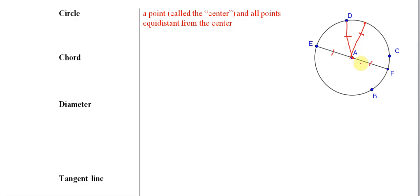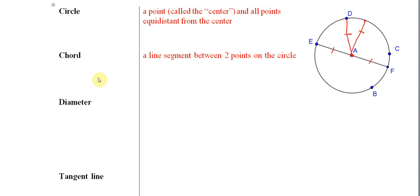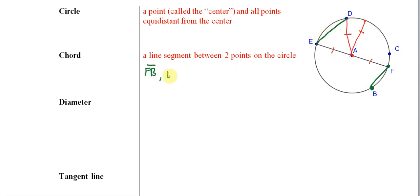Next, let's talk about a chord. A chord is a line segment between two points on the circle. In our example, there are many chords we can construct. From F to B — we can call that a chord. From E to D — that's also a chord. And many others are chords of the circle.